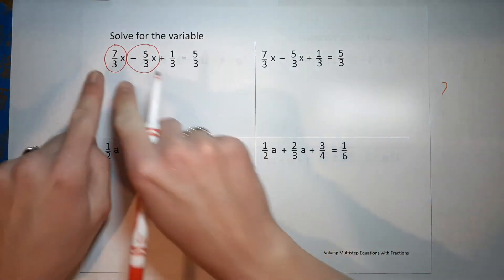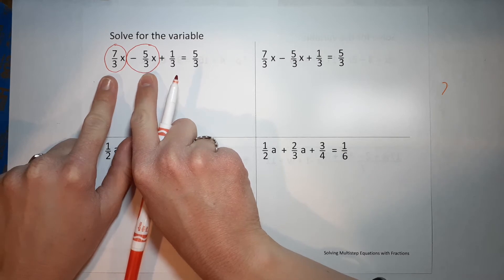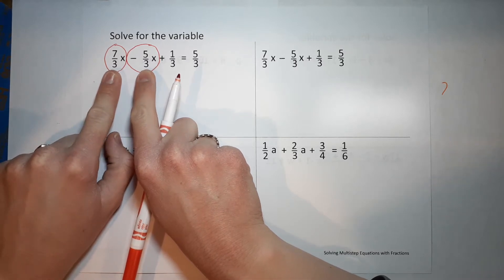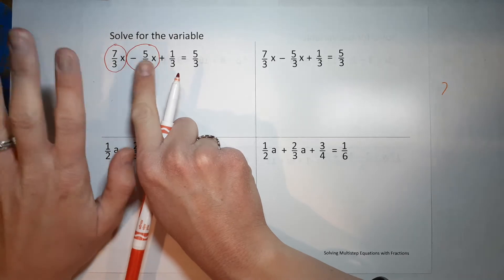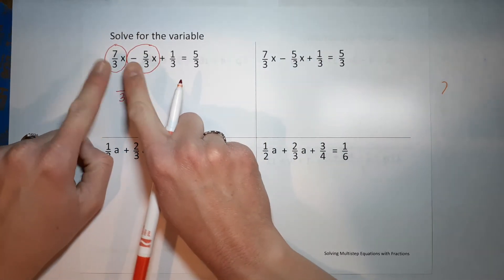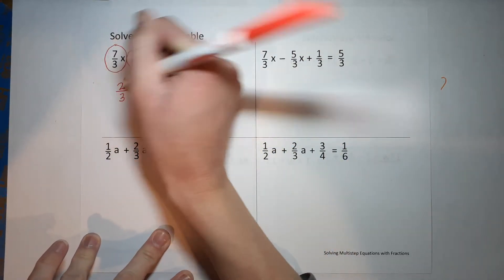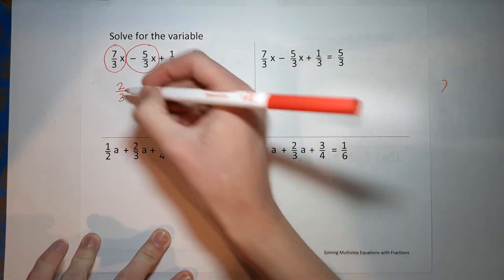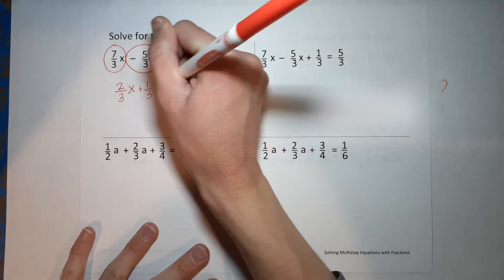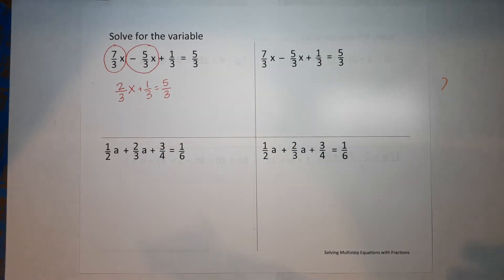So I've got 7/3 x minus 5/3 x. When we subtract fractions, the denominators must be the same — happy day, they're already the same. When you add or subtract, the bottom stays as that common denominator and the top is what you subtract: 7 minus 5 gives me 2. So 7/3 x minus 5/3 x gives me 2/3 x. Then we've still got plus 1/3 equals 5/3.